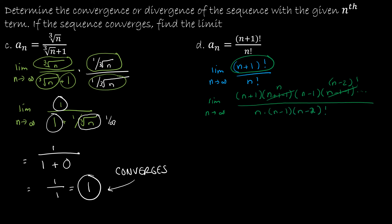So keeping in mind that n minus 2 factorial can cancel with the matching terms in the denominator, what do I have left? I have the limit as n approaches infinity of n plus 1.